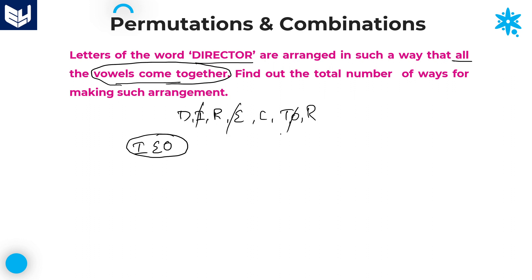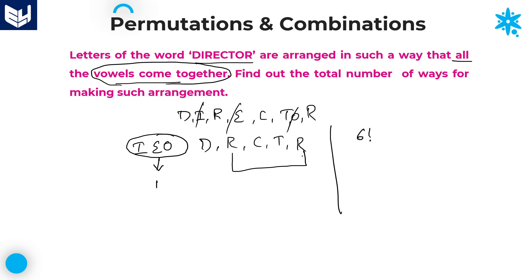The remaining consonants are D, R, C, T, R — these are 5 remaining letters. Now arrange these 5 letters and the single entity of vowels: 5 plus 1 equals 6, so these 6 letters can be arranged in 6 factorial ways. However, the letter R is repeated twice, so we need to divide by 2 factorial.